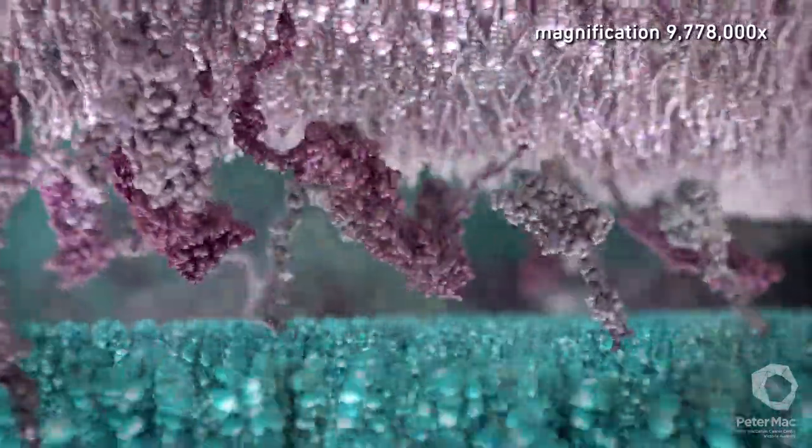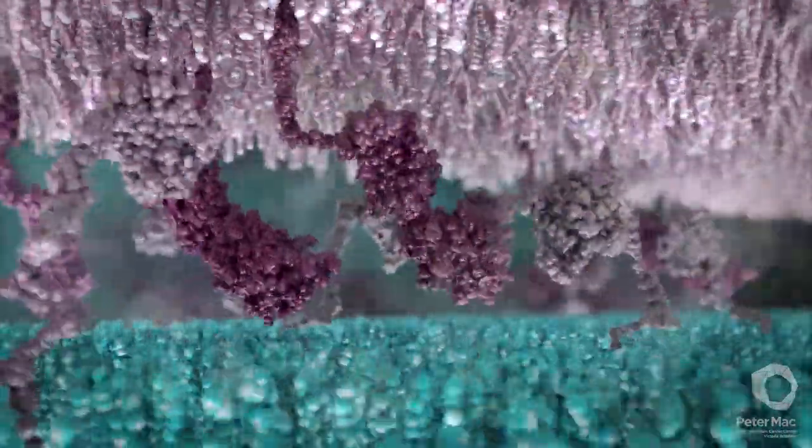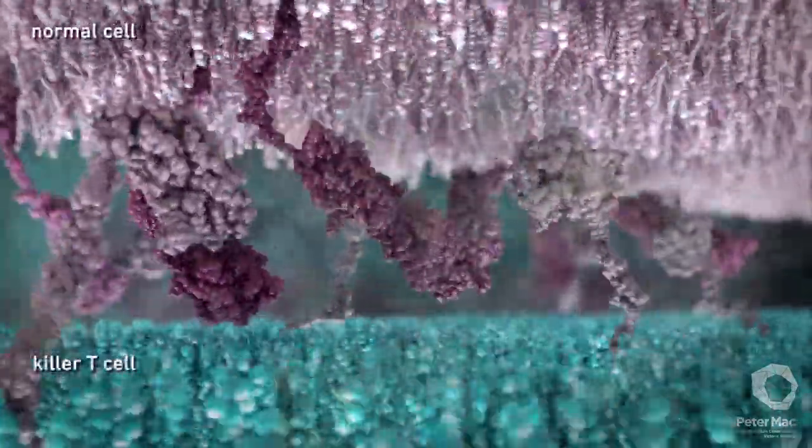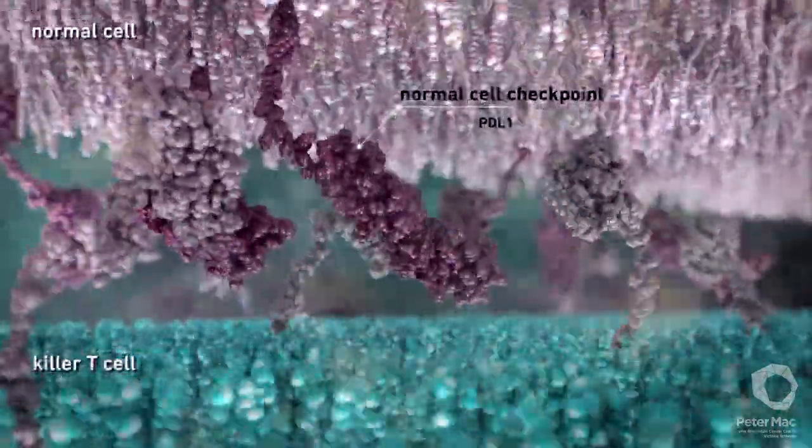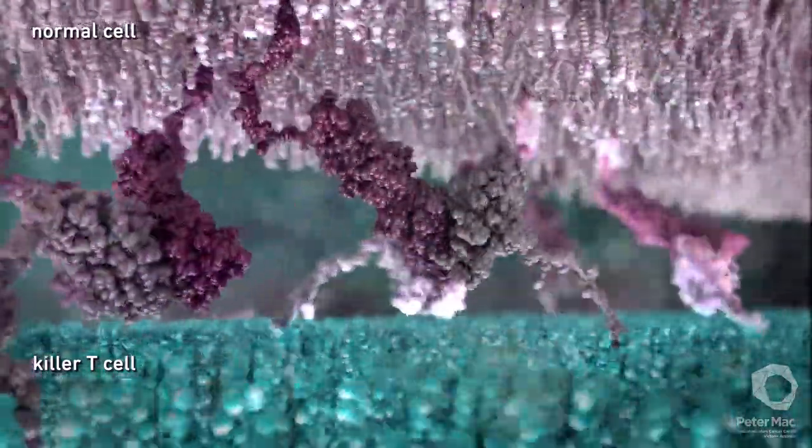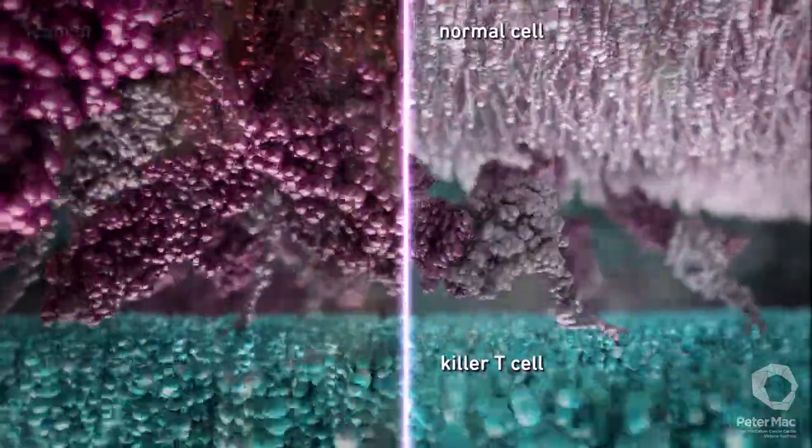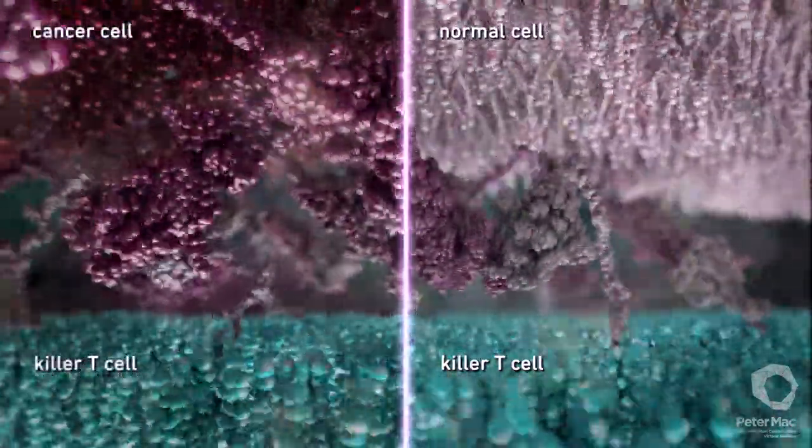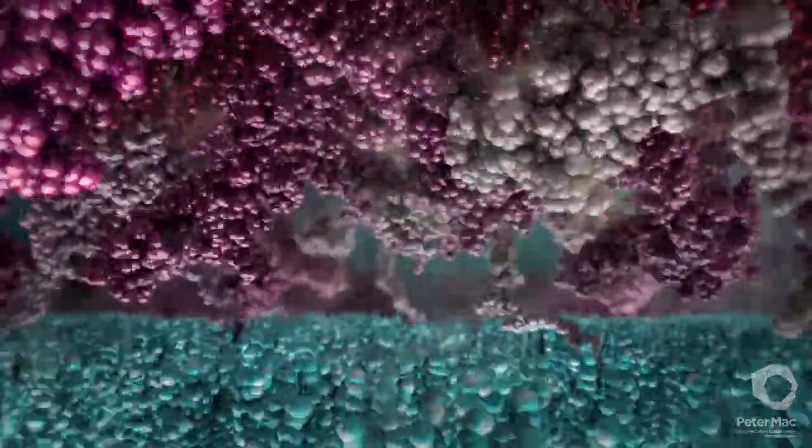Another way cancer cells can avoid detection is by tricking killer T cells into seeing them as normal. As we have learned, killer T cells can bind to checkpoints on another cell to determine if the cell is normal. On the left we see a cancer cell displaying many checkpoints on the cell surface, sending a false signal to killer T cells that the cancer cell is normal and to leave it alone.